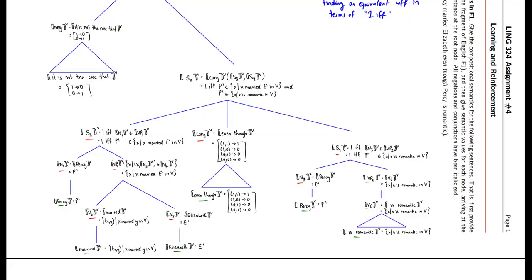For example, with N1 here, we know it's getting its meaning from its only daughter, Percy — so the rule is just Percy, and then the value is below. With S3, here's the rule that says it's 1 if noun 1 is an element of VP1, and the value is: it's 1 if Percy is an element of the set of X such that X married Elizabeth in V.